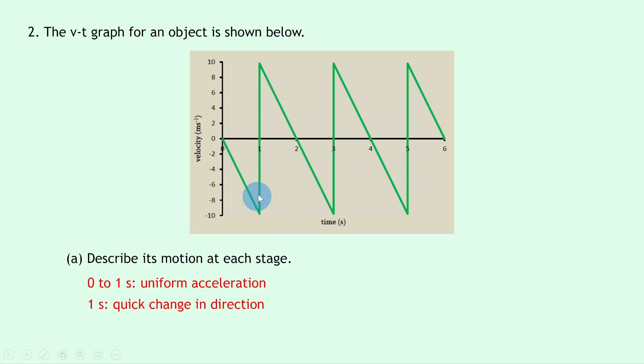Then at one second there's a quick change in direction where the line goes from below the x-axis to above the x-axis. So remember going from below the x-axis to above the x-axis or vice versa shows a change in direction. And you can see it's happening very quickly over a very short period of time.